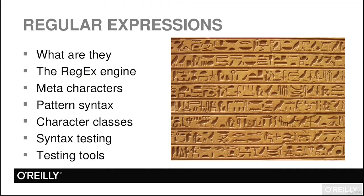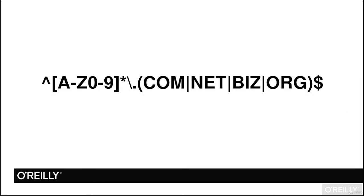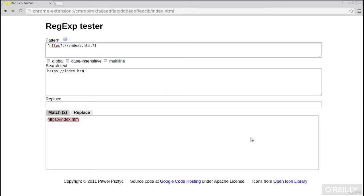Welcome back. We're discussing regular expressions — pattern syntax using meta characters and character classes. We're examining a pattern with a caret symbol, some character contents, and a dollar sign. Let's address the dot character. As shown in the pattern, the dot is treated literally because we have the backslash escape character. However, without escaping, the dot is a meta character in the regex engine that matches any character.